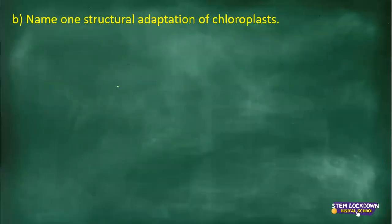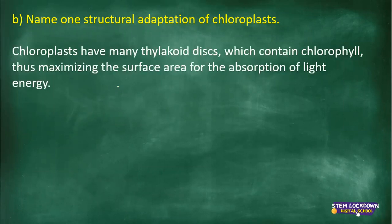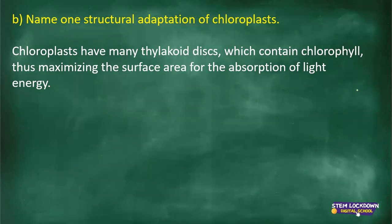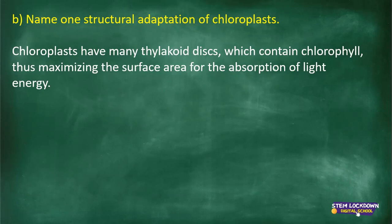Name one structural adaptation of chloroplasts. Chloroplasts have many thylakoid discs which contain chlorophyll, thus maximizing the surface area for the absorption of light energy. Chlorophyll is involved in photosynthesis, and you need light energy as an input for photosynthesis. That is it from me — any questions?